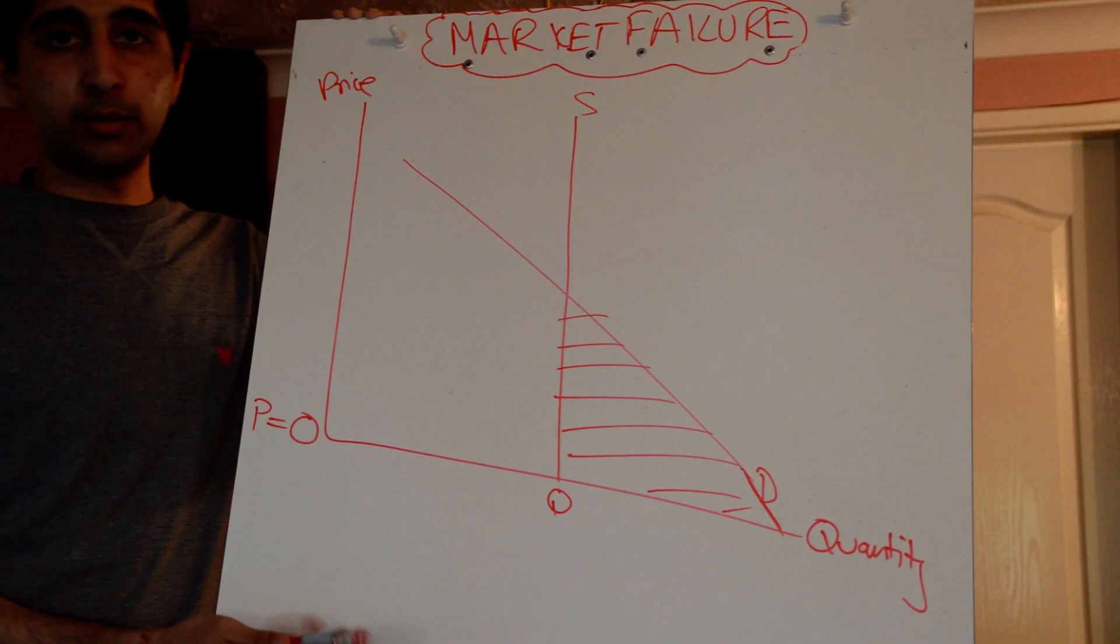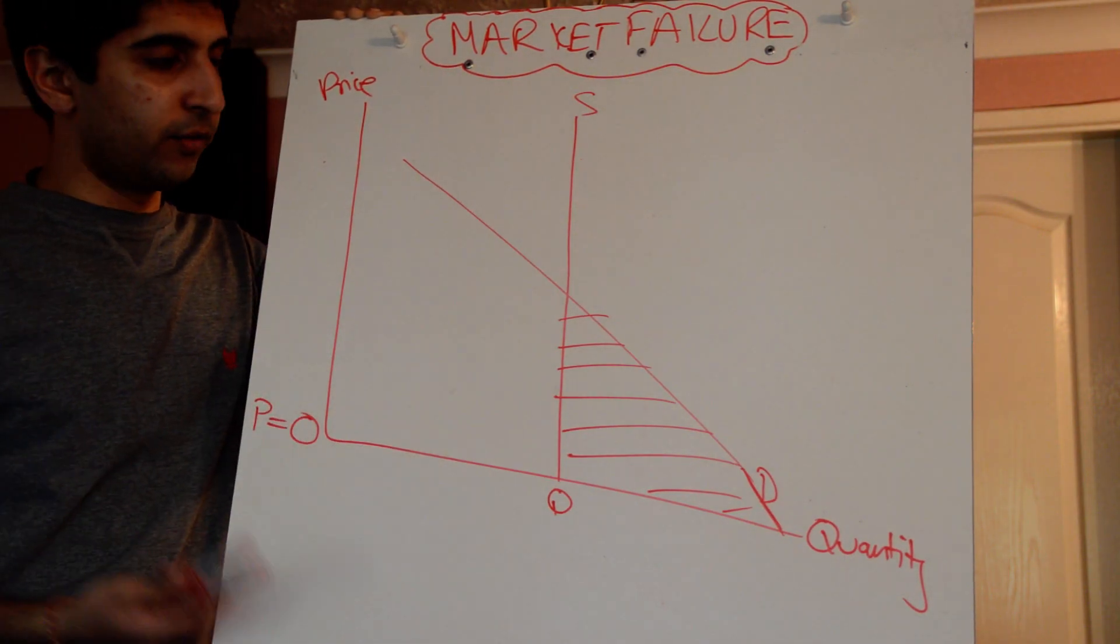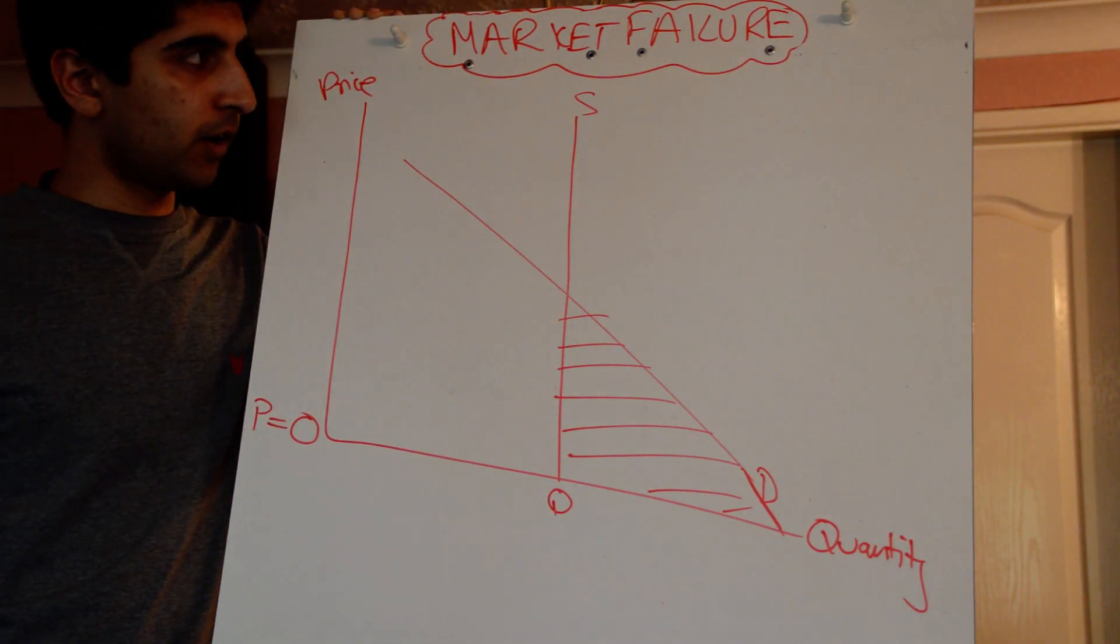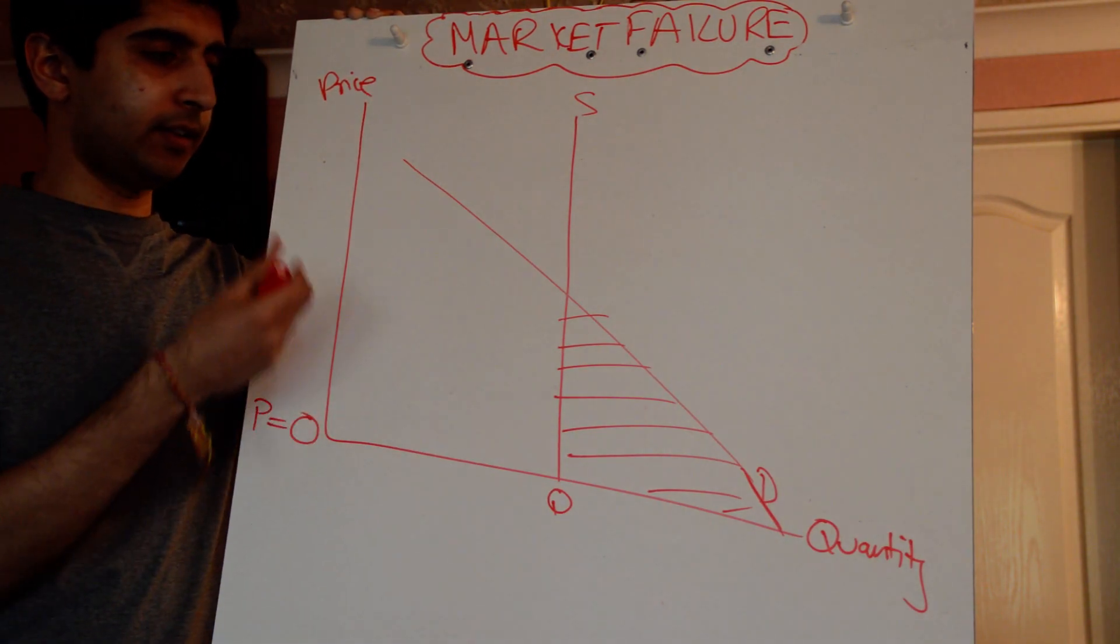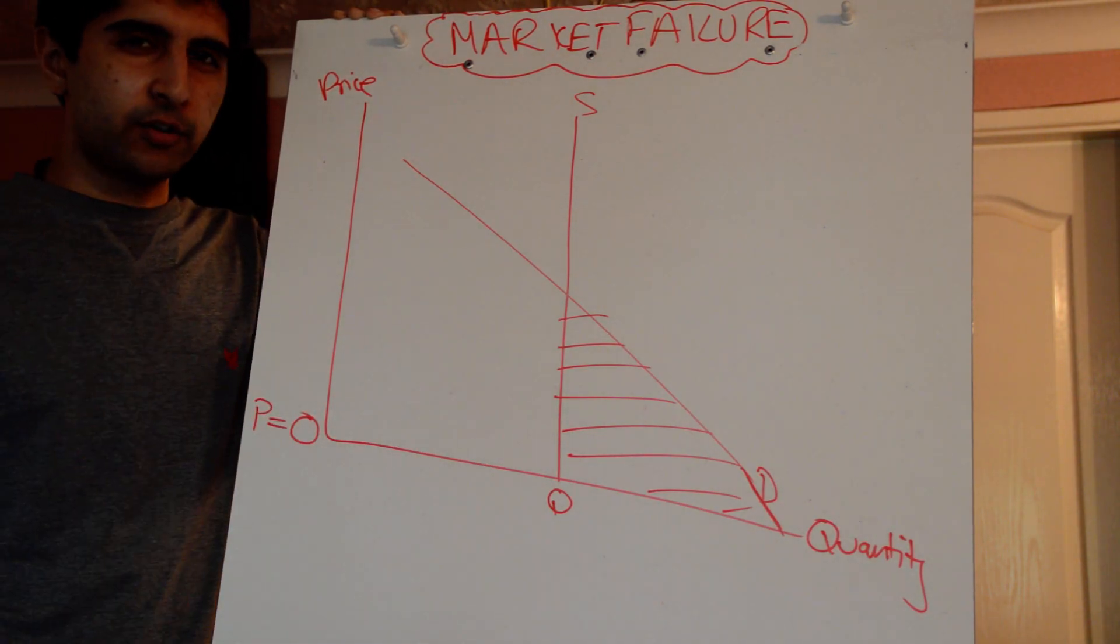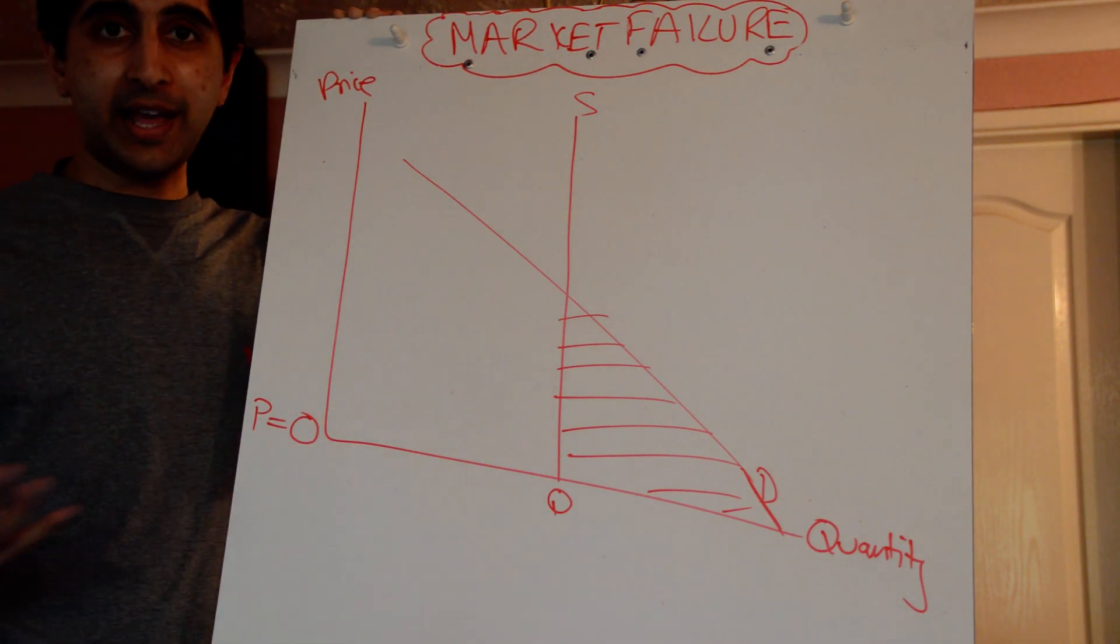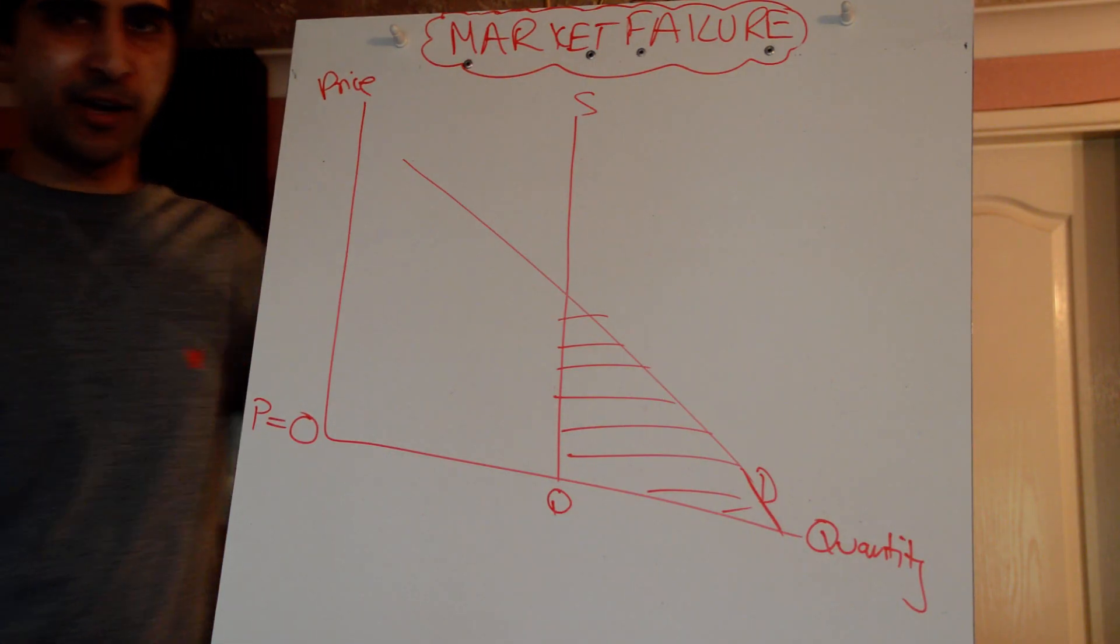If it's a case where no one's going to provide it, we're going to have a missing market. So state provision seems the obvious way of solving that problem. But we still have the same problems we talked about before with that too. So that's market failure with merit goods, positive externalities, and public goods. That kind of rounds up the whole section of market failure and government failure. You now have all the notes you need at A2 for that. I hope that's done it for you guys. Thank you very much.